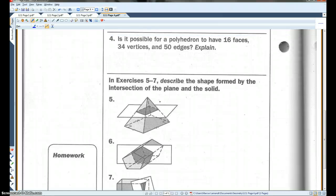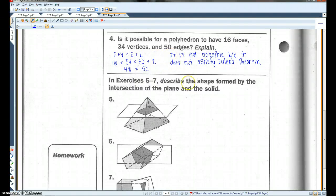Is it possible for a polyhedron to have 16 faces, 34 vertices, and 50 edges explained? Go ahead and answer, and then hit play for the answers you should have gotten. This is the answer you should have gotten.